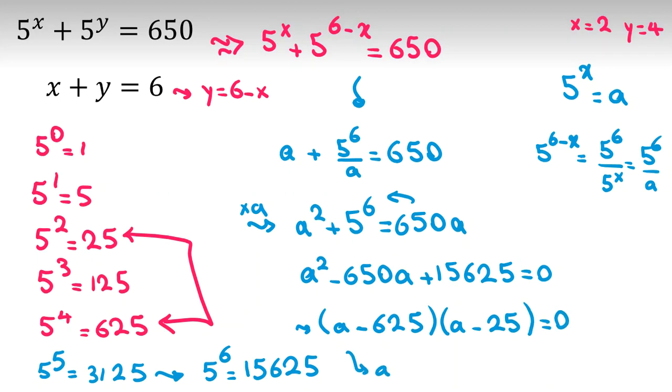By this way, I conclude a is 625 or 25, and because a is 5^x, I conclude x is 2 or 4.